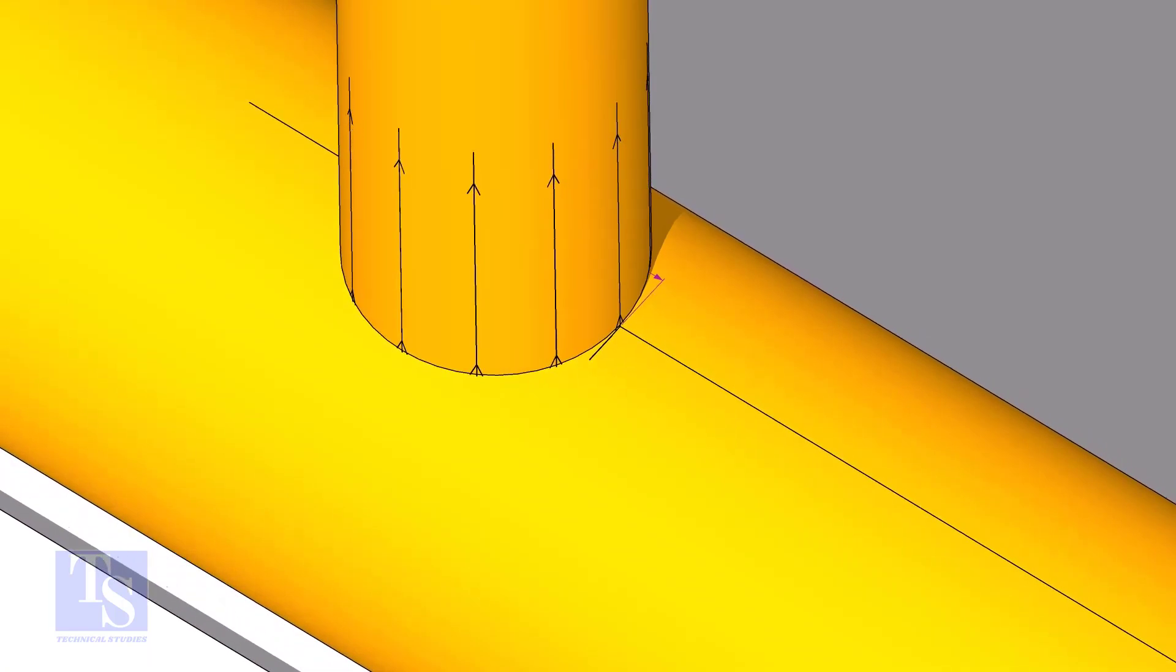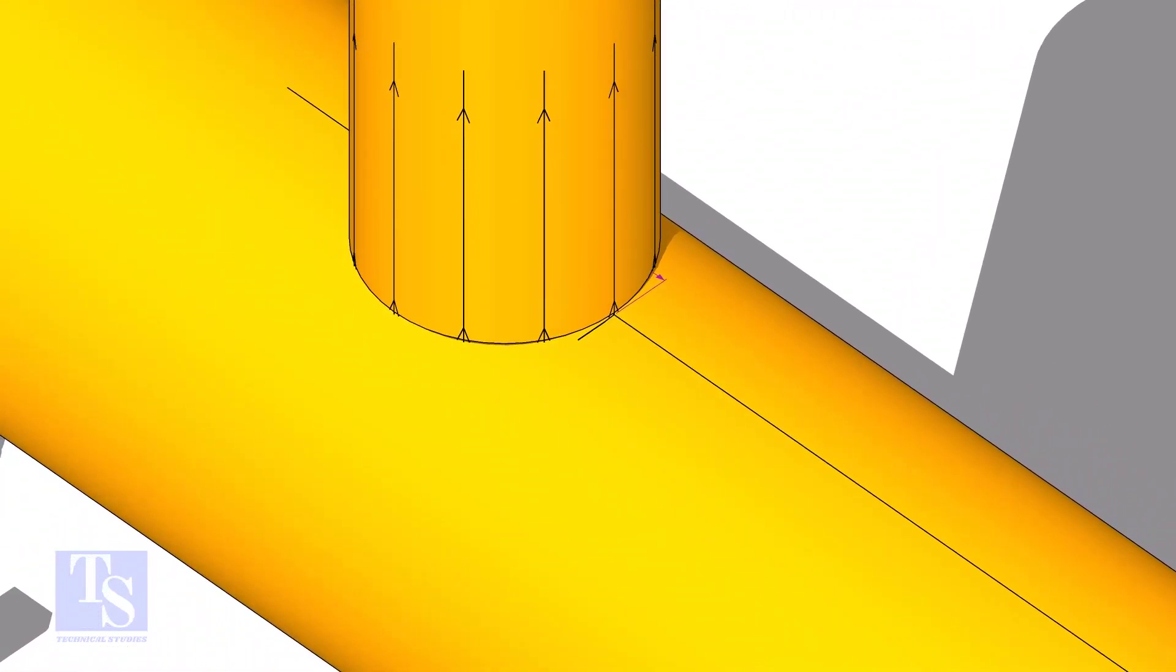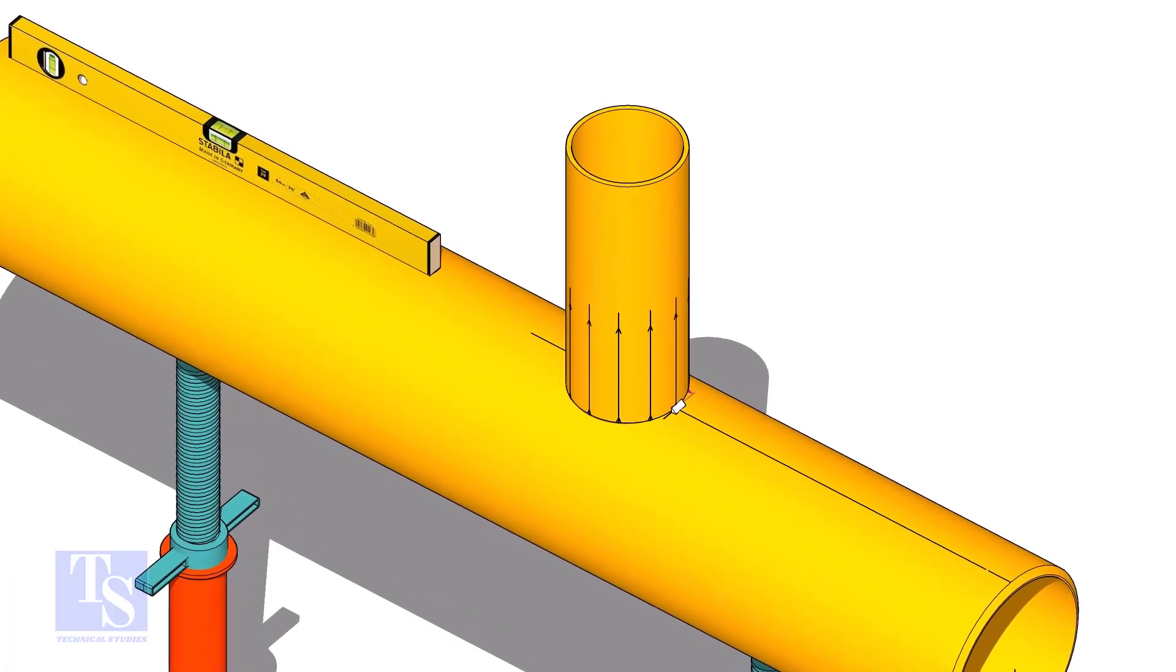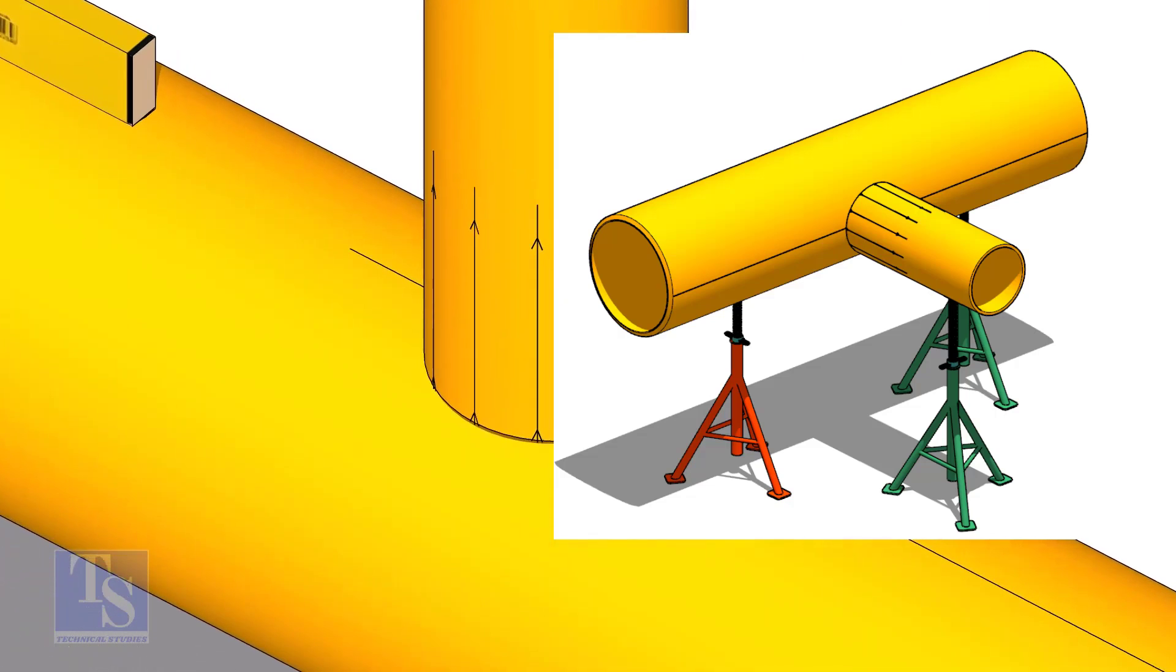Put the branch exactly on this marking, matching the branch centerline. Tack weld the branch on the header just to stand it vertically. If the pipes are large, you can do it in the horizontal position also.